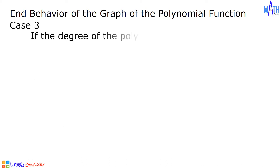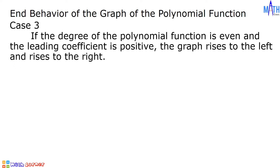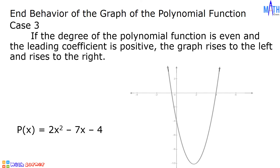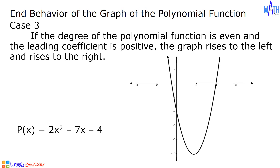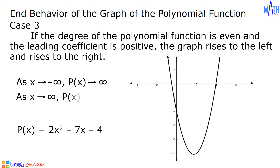Case number three: if the degree of the polynomial function is even and the leading coefficient is positive, the graph rises to the left and rises to the right. Consider p of x equals 2x squared minus 7x minus 4. The graph rises to the left and rises to the right. As x approaches negative infinity, p of x approaches positive infinity. As x approaches positive infinity, p of x approaches positive infinity.